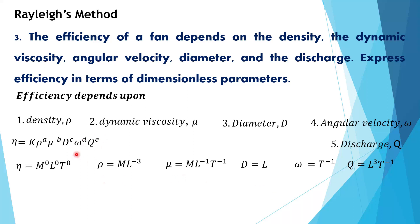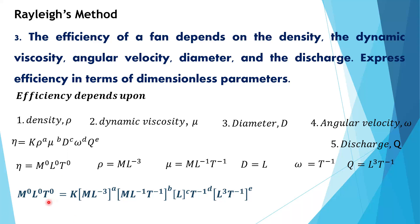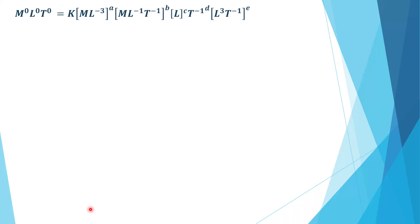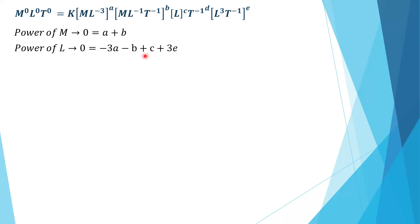We substitute all these values into the equation, then equate the powers of M, L, and T to determine a, b, c, d, and e. Equating power of M: 0 = a + b. Equating power of L: 0 = −3a − b + c + 3. Equating power of T: 0 = −b − d − e.